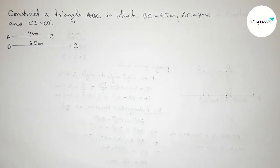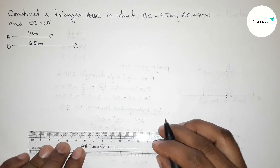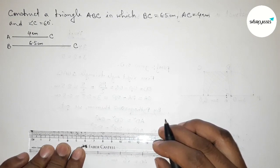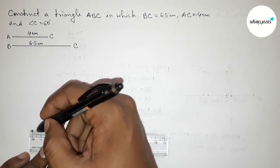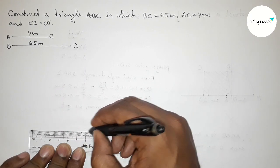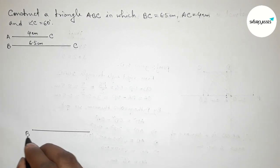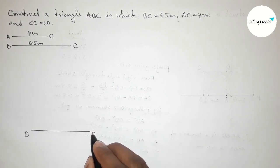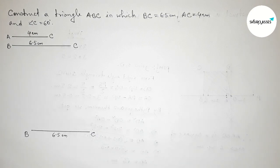Now we have to draw the side BC equals 6.5 centimeter. Starting from 0, this is 6.5 centimeter. Taking here point B and here point C, so BC equals 6.5 centimeter.